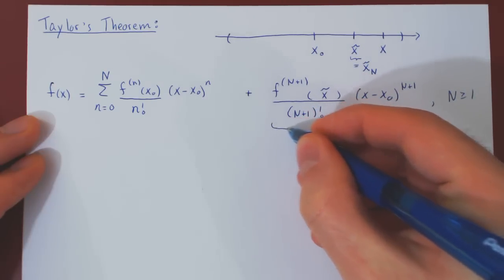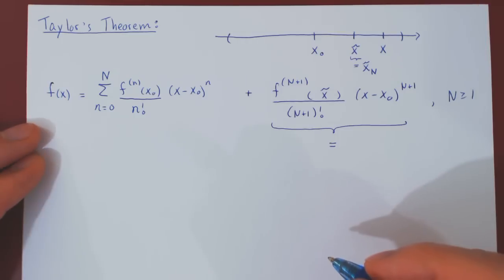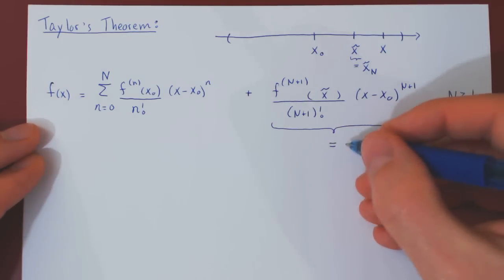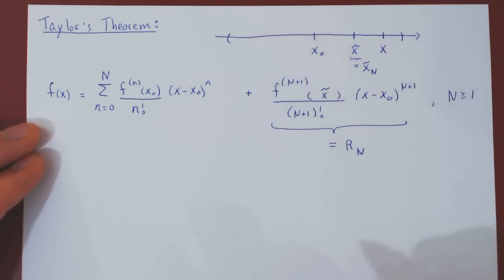And we give this a shorter name. This is the remainder. And so we call this R sub n, as it depends on the choice of positive integer n.